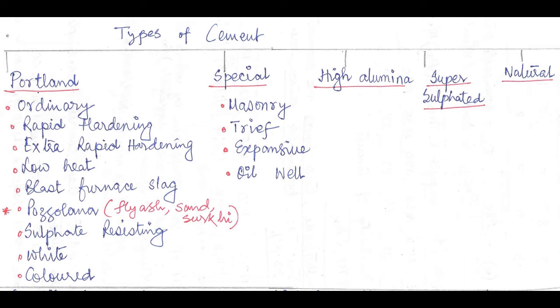Pozzolana - by the way, pozzolana is a combination of fly ash, sand, and surkhi. Next is sulfate resisting Portland, white Portland, and colored Portland.